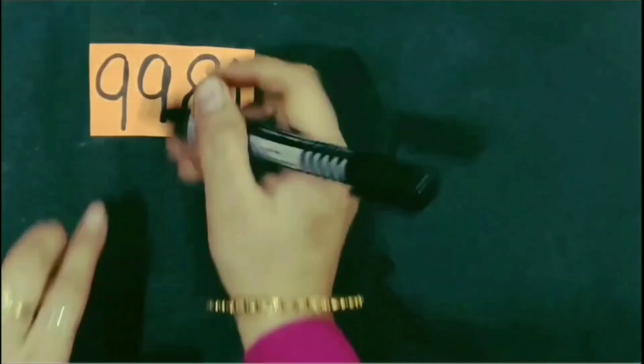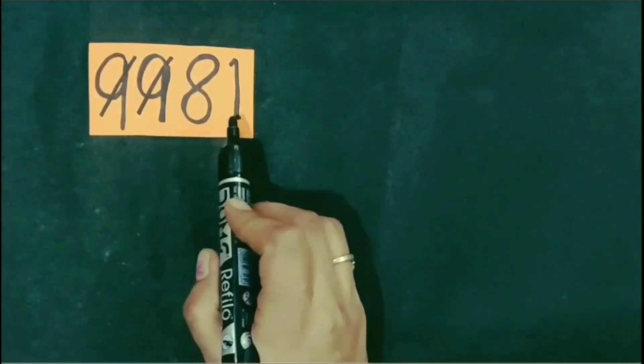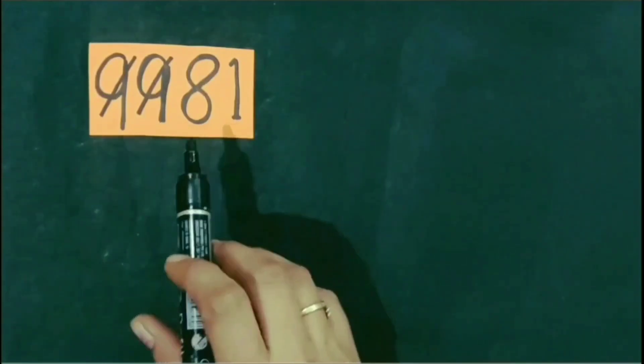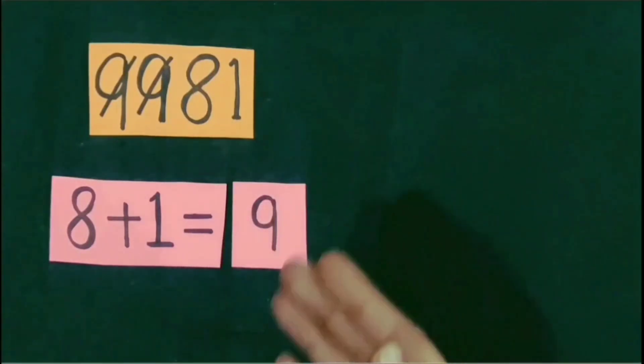The number is 9981. We have to find out whether the number is a multiple of 9 or not. To find out this, first of all we omit 9 from the given number. Which digits are left? Yes, two digits are left: 8 and 1. Now we add the remaining digits. 8 plus 1 is equal to 9. So the number is a multiple of 9.